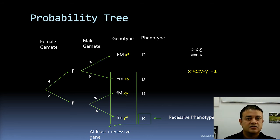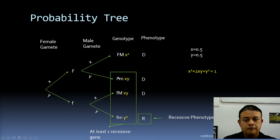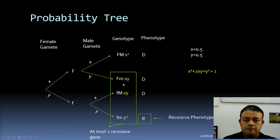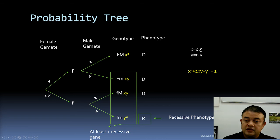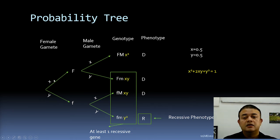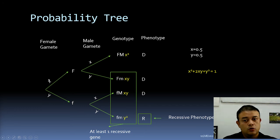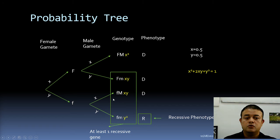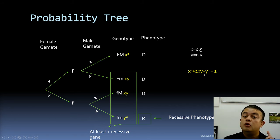If x and y are both 0.5, then the frequency of x² is 0.5 × 0.5 = 0.25. To combine probabilities of multiple outcomes, you add them. If you know only one of x or y, you calculate the other as 1 minus that value. So 1 minus y = x, or 1 minus x = y. As per Hardy-Weinberg: x² + 2xy + y² = 1.